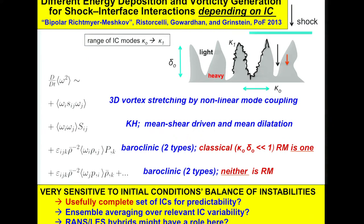The question is how do you characterize this in your simulations? We envision needing a useful, complete description of initial conditions for predictability — some kind of ensemble averaging or relevant initial condition variability. Hybrid RANS-LES might have a role here since RANS already involves some averaging. Possible directions include machine learning to learn the initial conditions, and proper orthogonal decomposition as a surprisingly viable possibility.